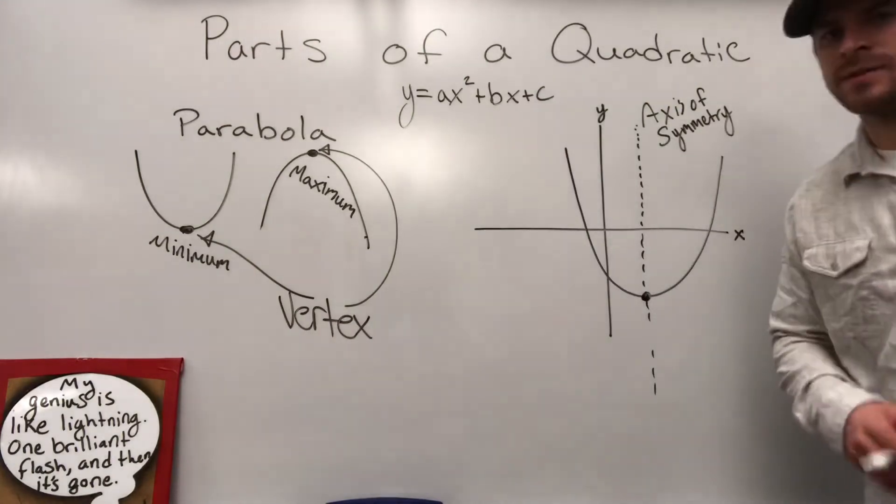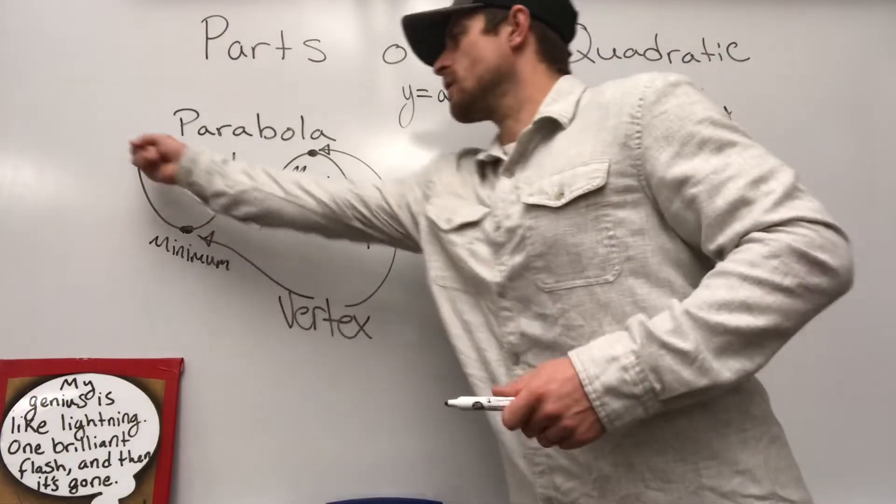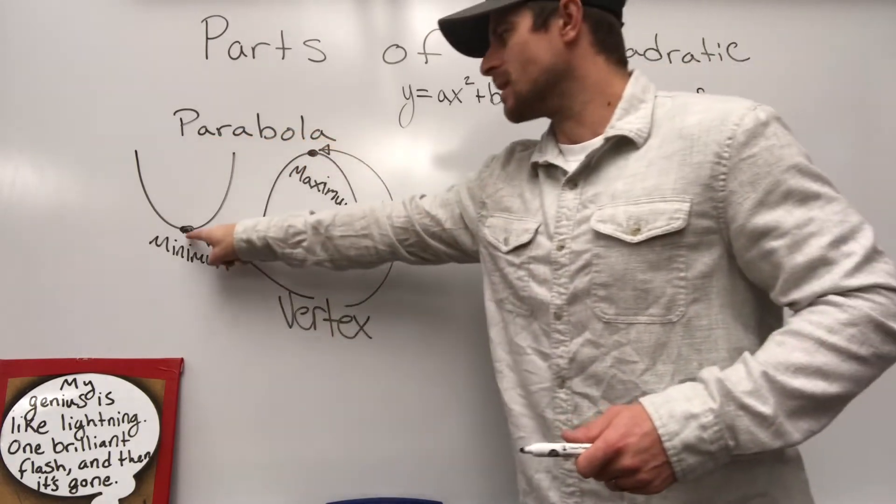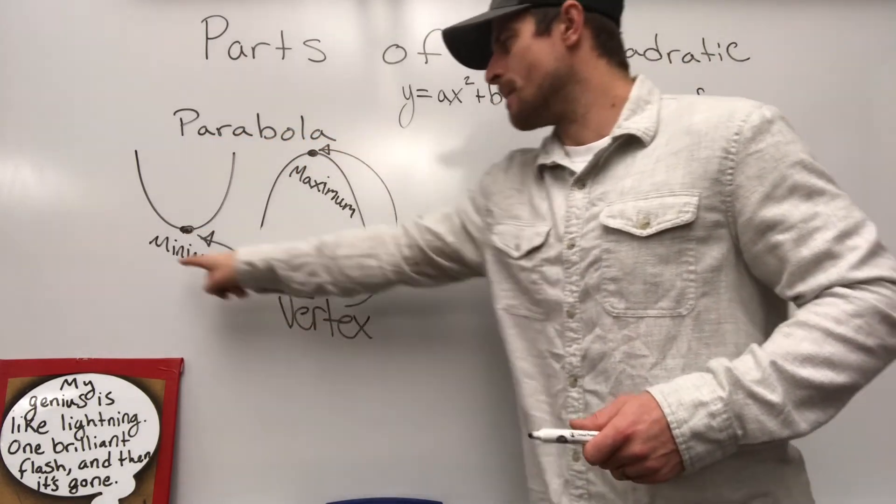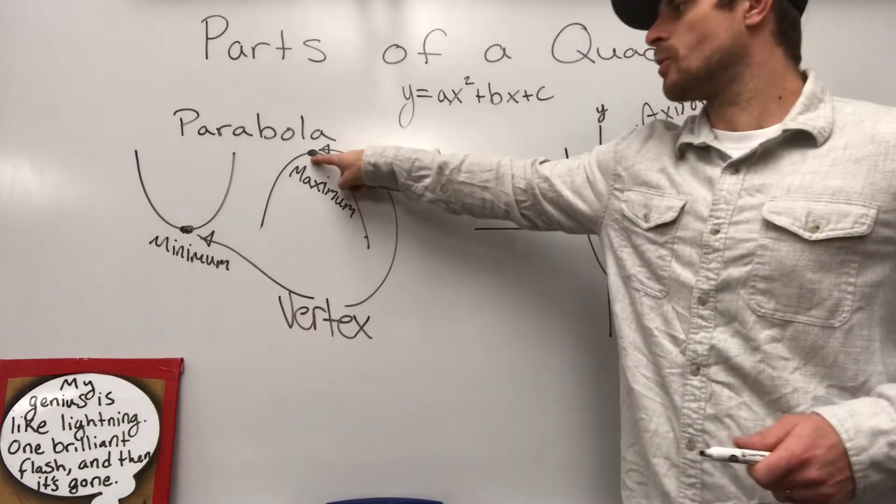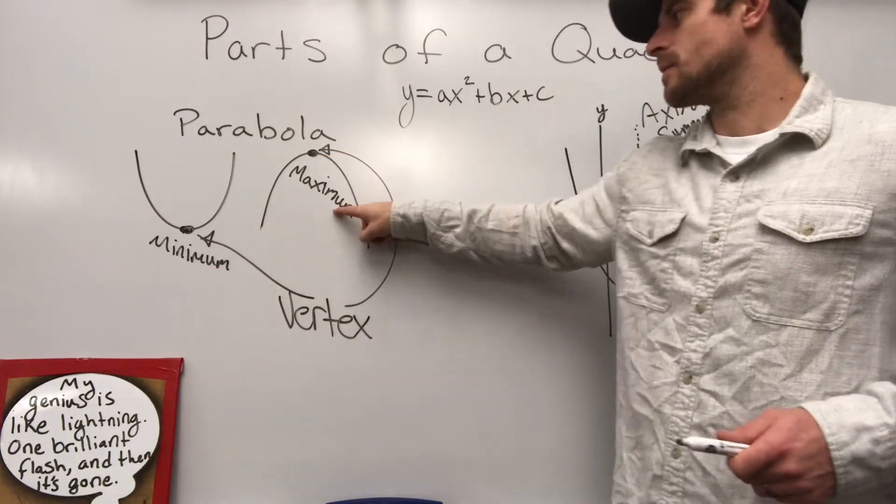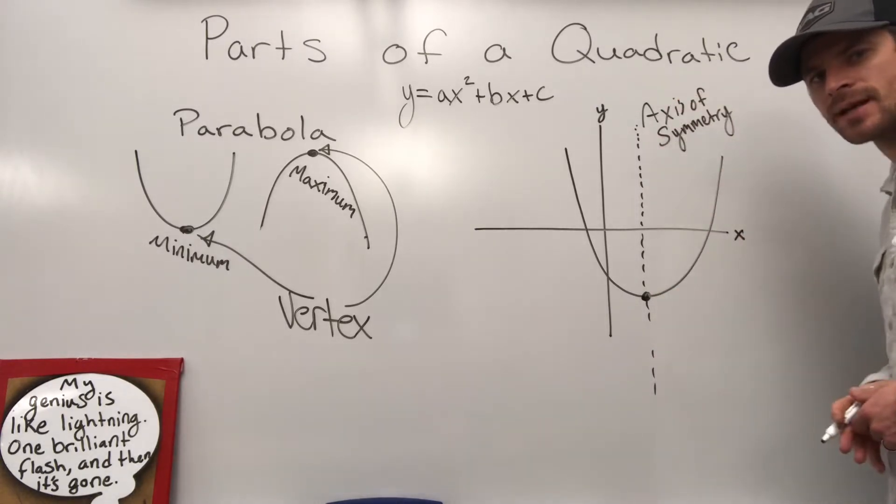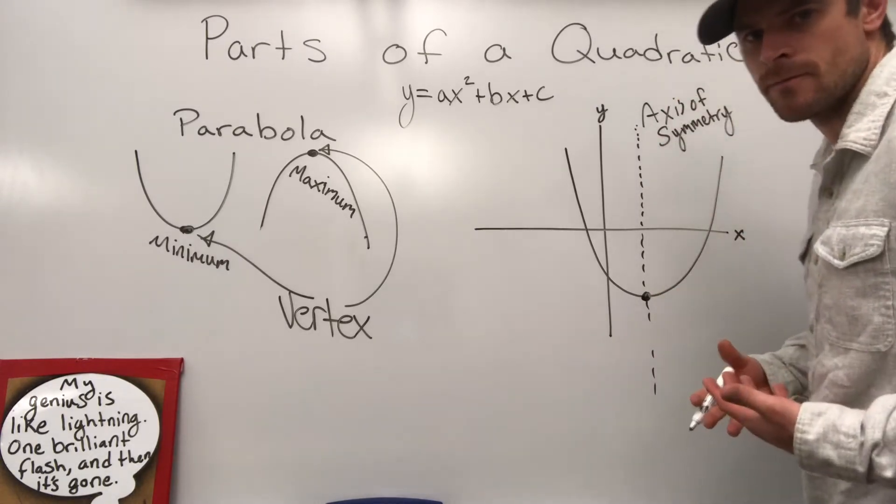So what have we discussed? We've discussed what the shape itself is called. The U shape or the umbrella shape is a parabola. When it's a low point, the vertex is a minimum. When it's a high point, the vertex is a maximum. And then we have the axis of symmetry that separates the left and the right side of the symmetrical figure.